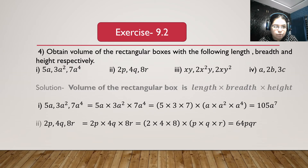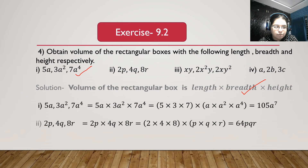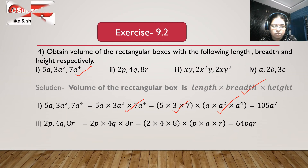Now question number 4: obtain the volume of rectangular boxes with the following length, breadth and height. First bit: 5a, 3a square and 7a to the power 4. Volume is 5a multiplied with 3a square multiplied with 7a to the power 4, giving 5 multiplied with 3 multiplied with 7 is 105, and a times a square times a to the power 4 is a to the power 1 plus 2 plus 4, which is a to the power 7. So we get 105a to the power 7.